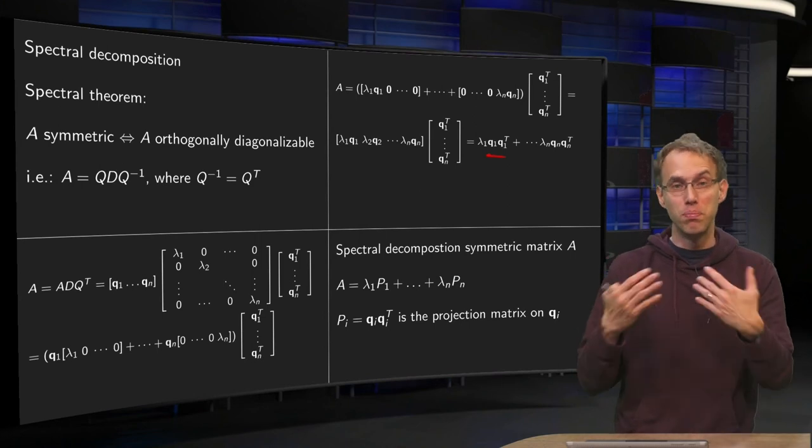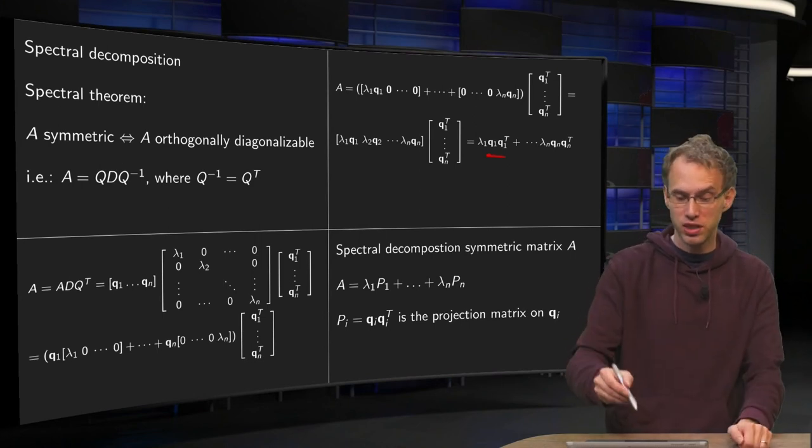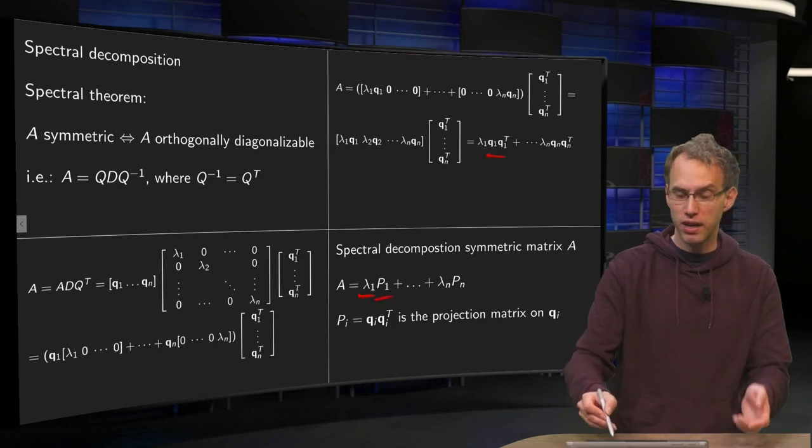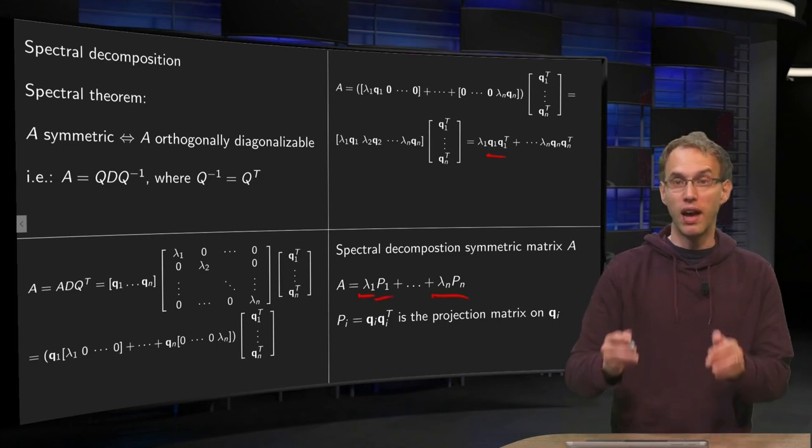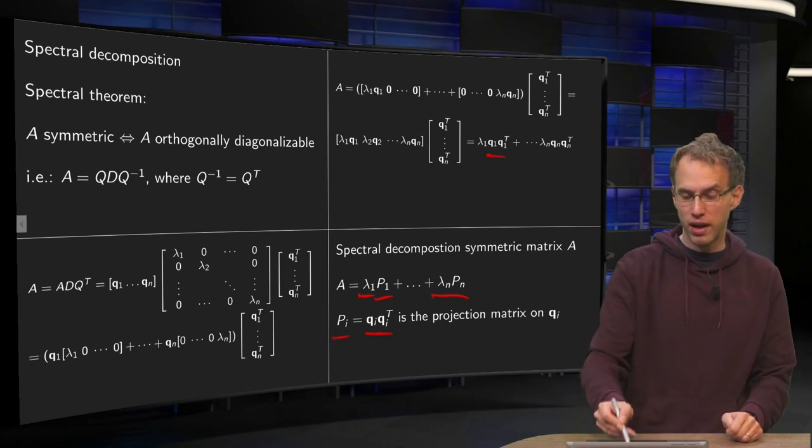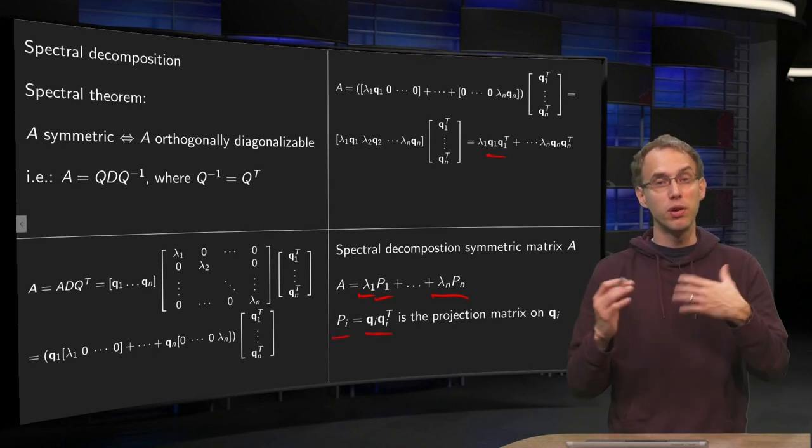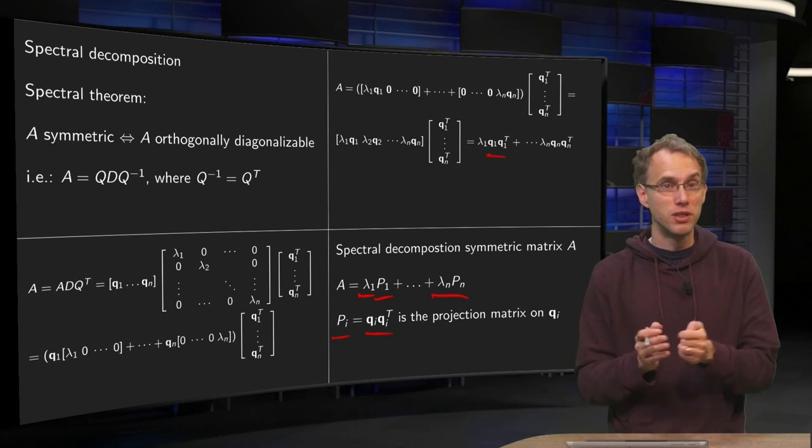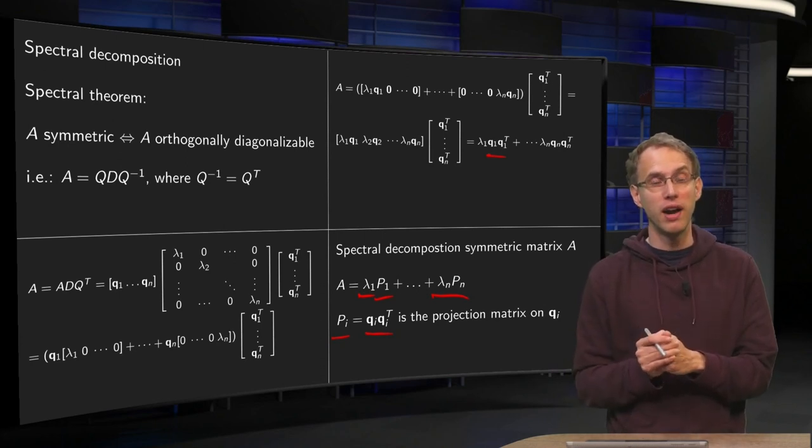So now you have decomposed A as a sum of matrices as eigenvalue lambda 1 times P1 plus eigenvalue lambda 2 times P2 until eigenvalue lambda n times Pn. Where those Pi's are Qi times Qi transpose and what they do is exactly projecting on the eigenvector Qi.